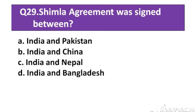Question number 29: The Shimla Agreement was signed between which two countries? Option A: India and Pakistan. Option B: India and China. Option C: India and Nepal. Option D: India and Bangladesh.